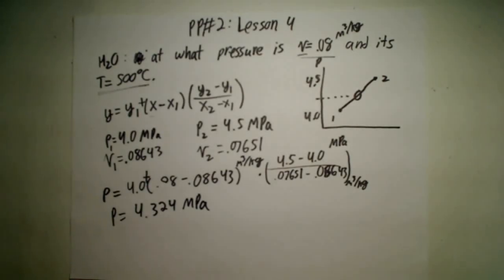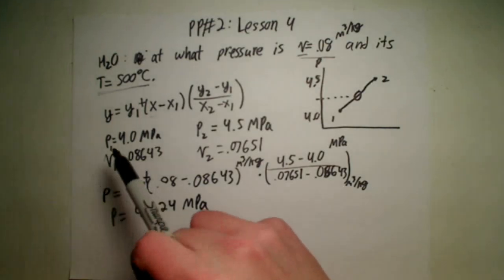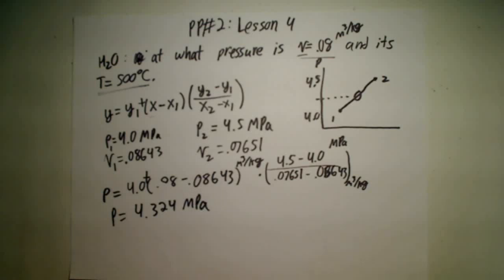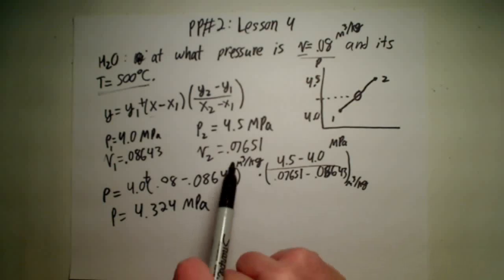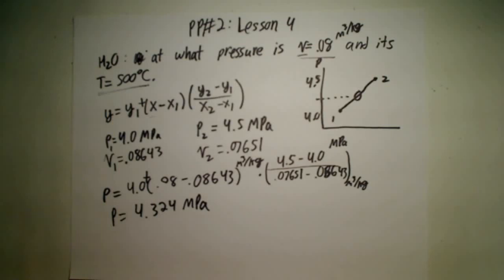You really have to watch yourself when it comes to looking at equations, because you can make one little mistake and it could screw up your whole problem. But this answer does make sense — it is in between 4 and 4.5, and it's really close to the middle but leaning toward the specific volume of point 2, because 0.08 is a smidge closer to 0.0765 than 0.0864. That's how you do linear interpolation with thermodynamic tables.